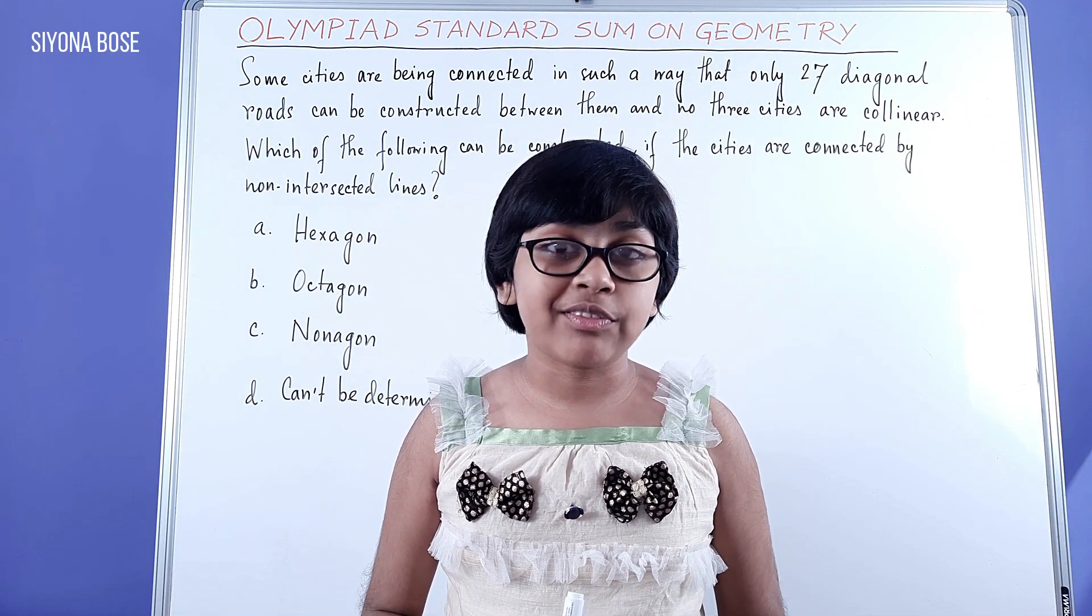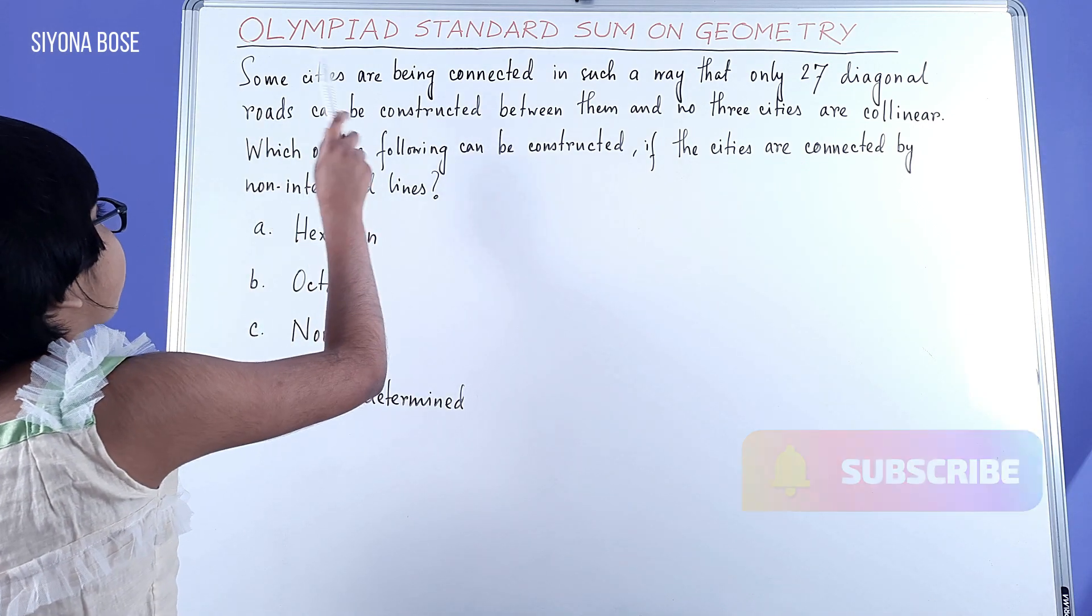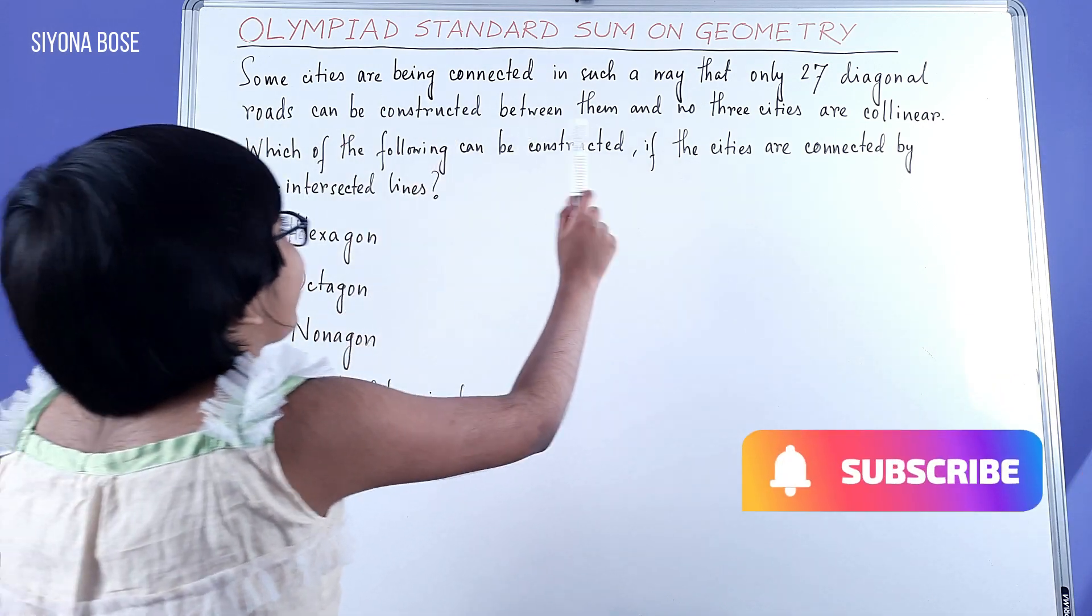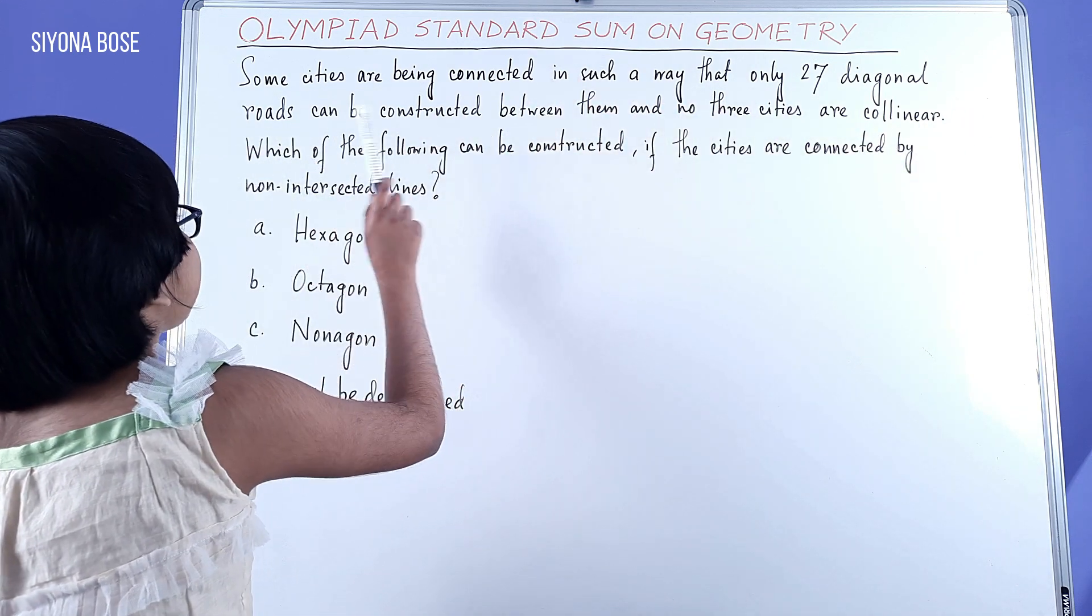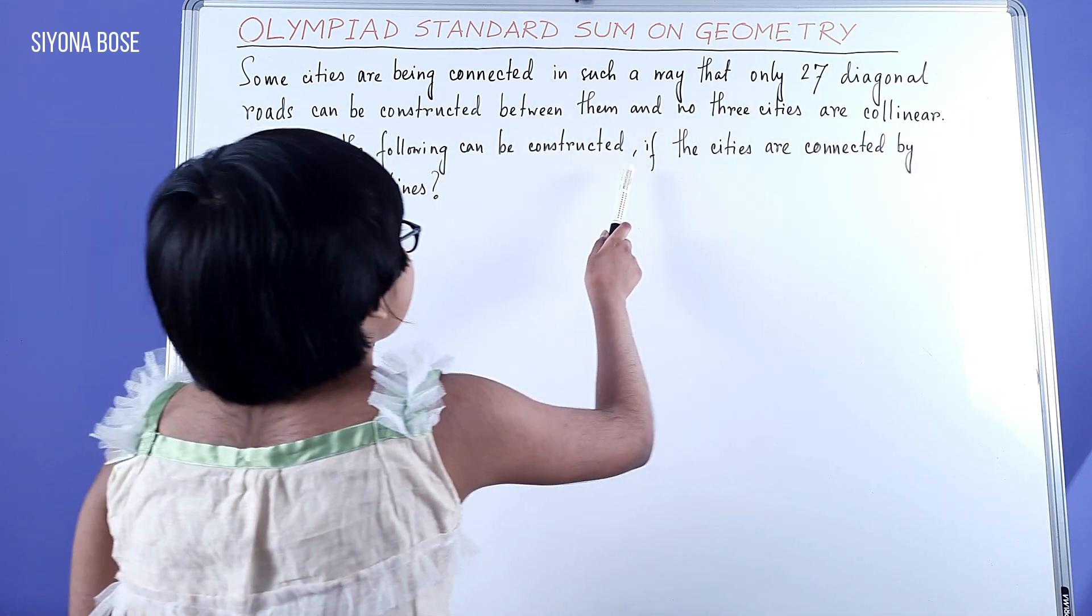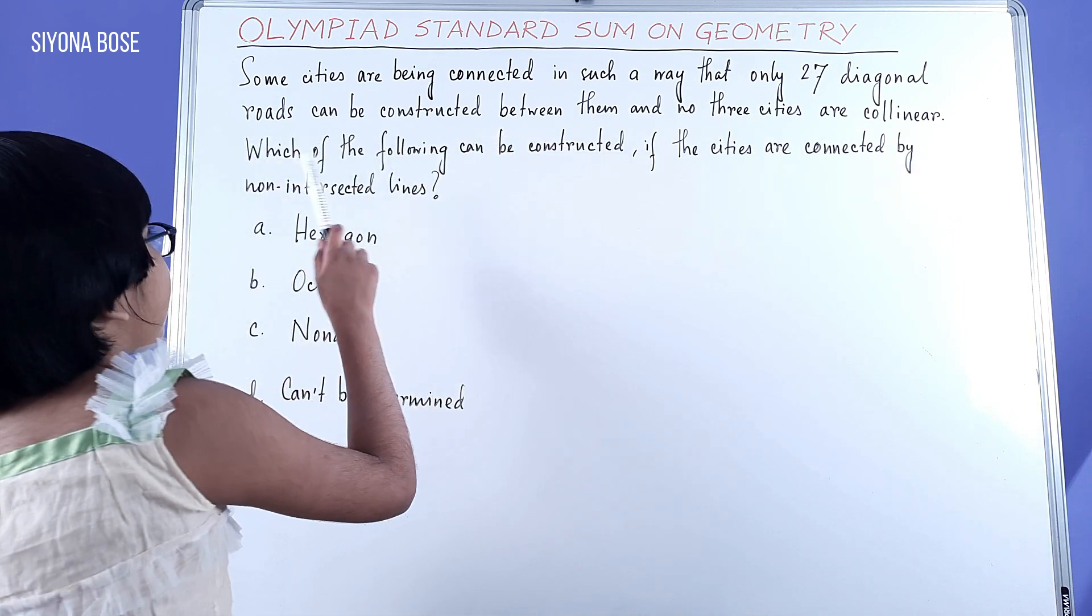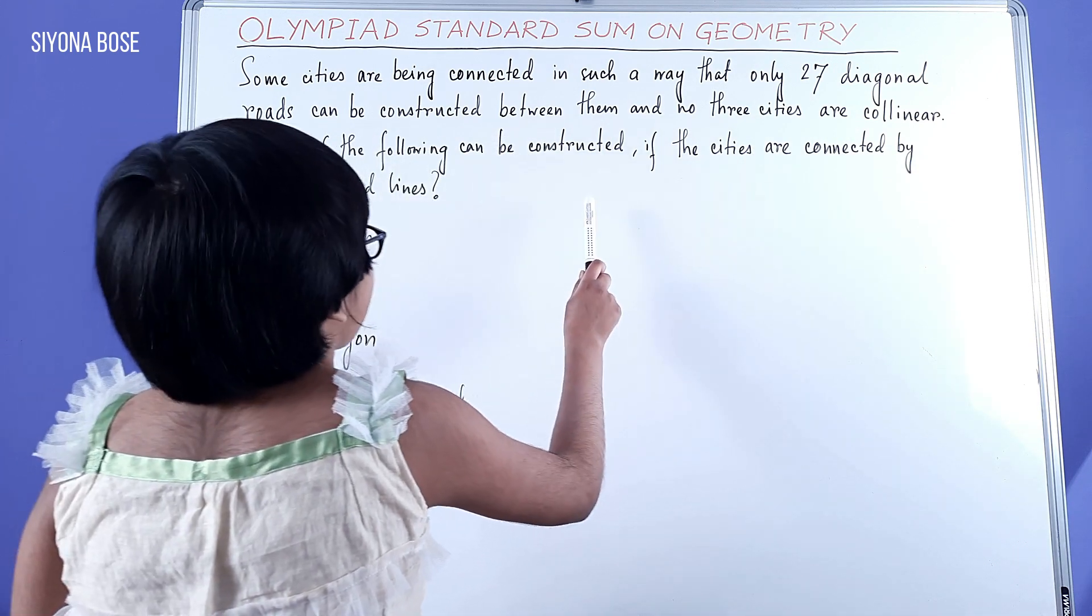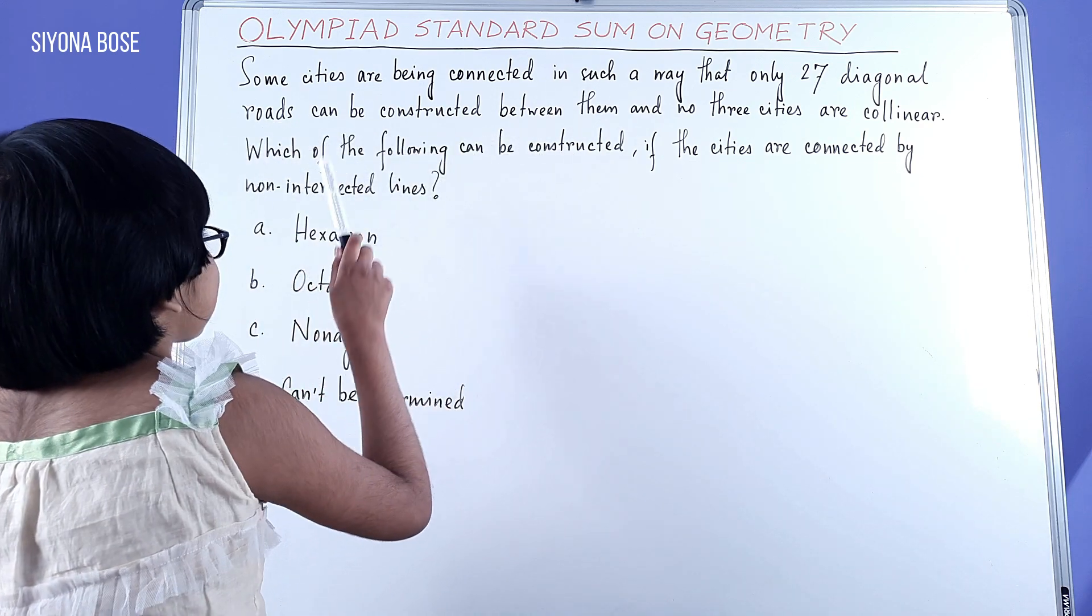I'm going to read the sum before we can begin. Some cities are being connected in such a way that only 27 diagonal roads can be constructed between them, and no three cities are collinear.